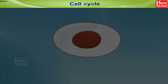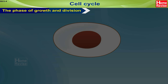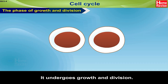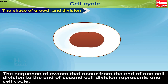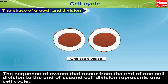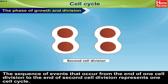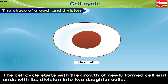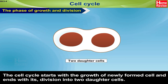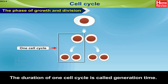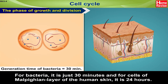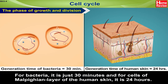Cell Cycle — the phase of growth and division. Each new cell is formed by the division of its parent cell; it then undergoes growth and division. The sequence of events from the end of one cell division to the end of the next represents one cell cycle. The duration of one cell cycle is called generation time — for bacteria it is just 30 minutes, and for cells of the Malpighian layer of human skin, it is 24 hours.